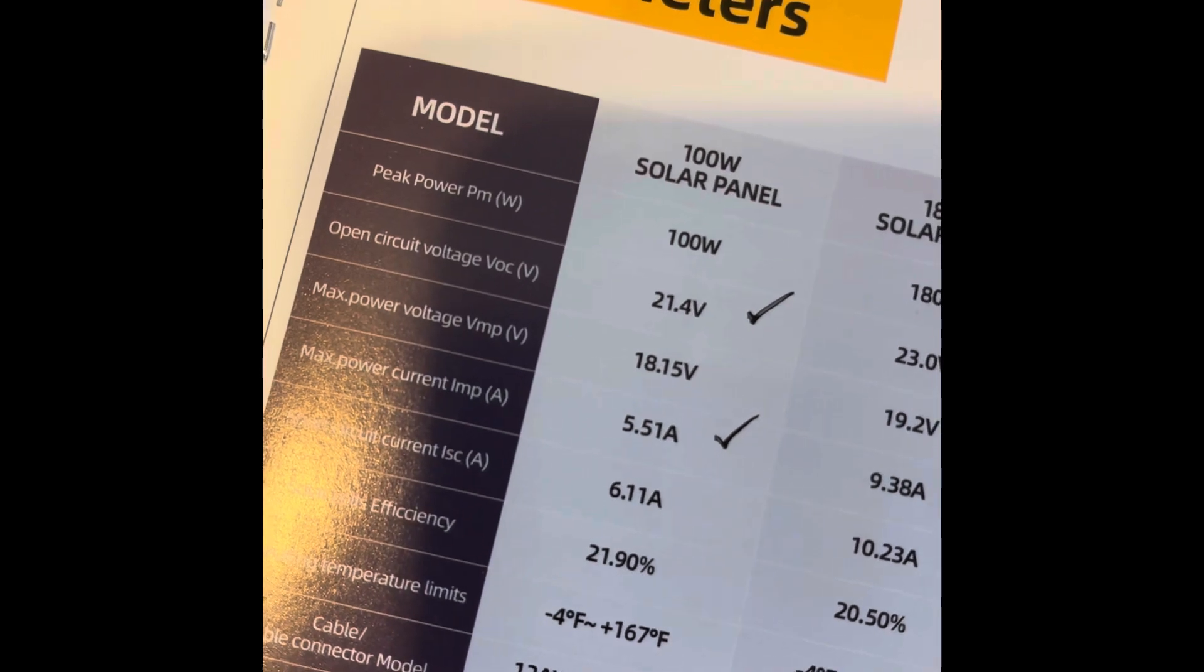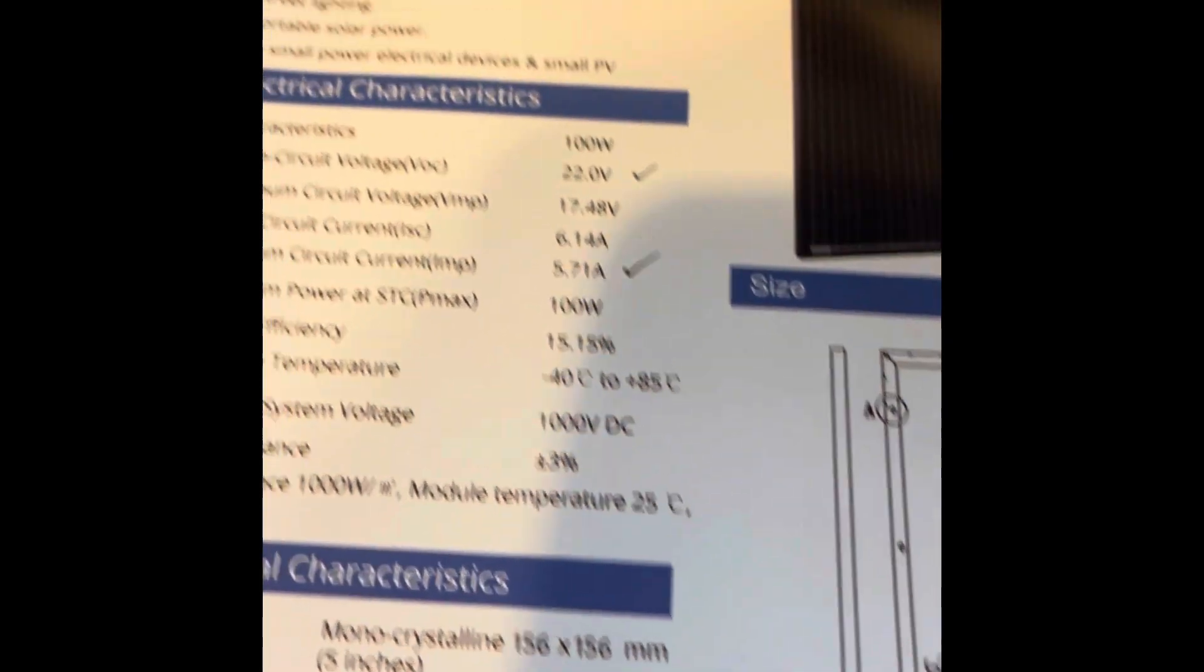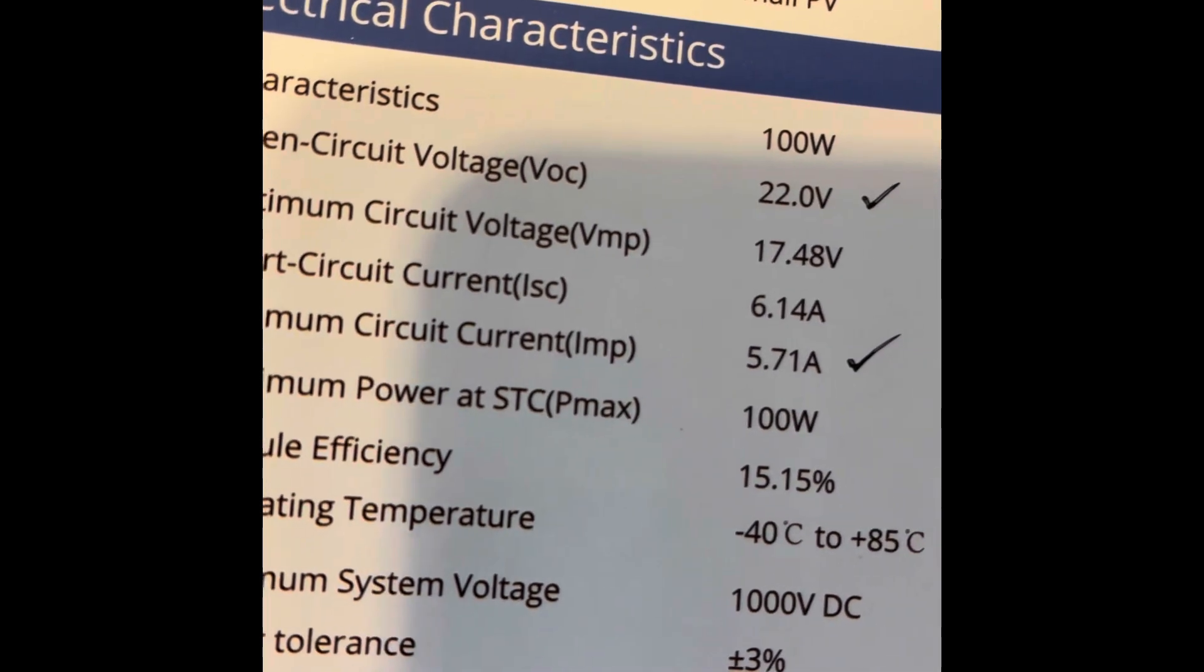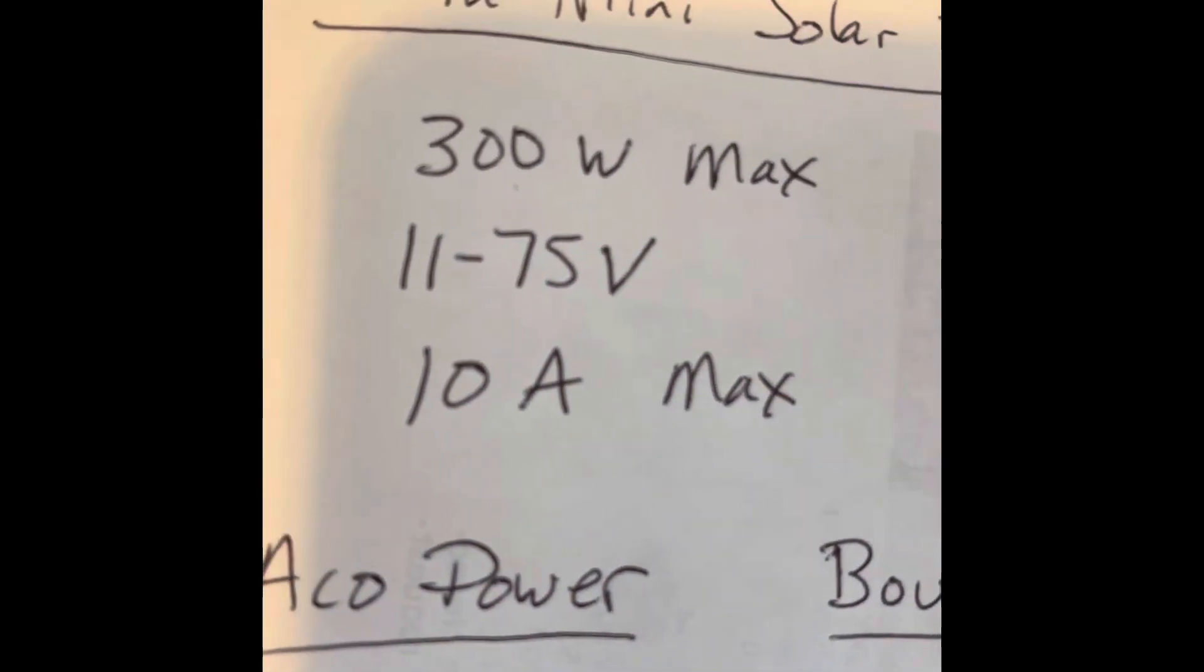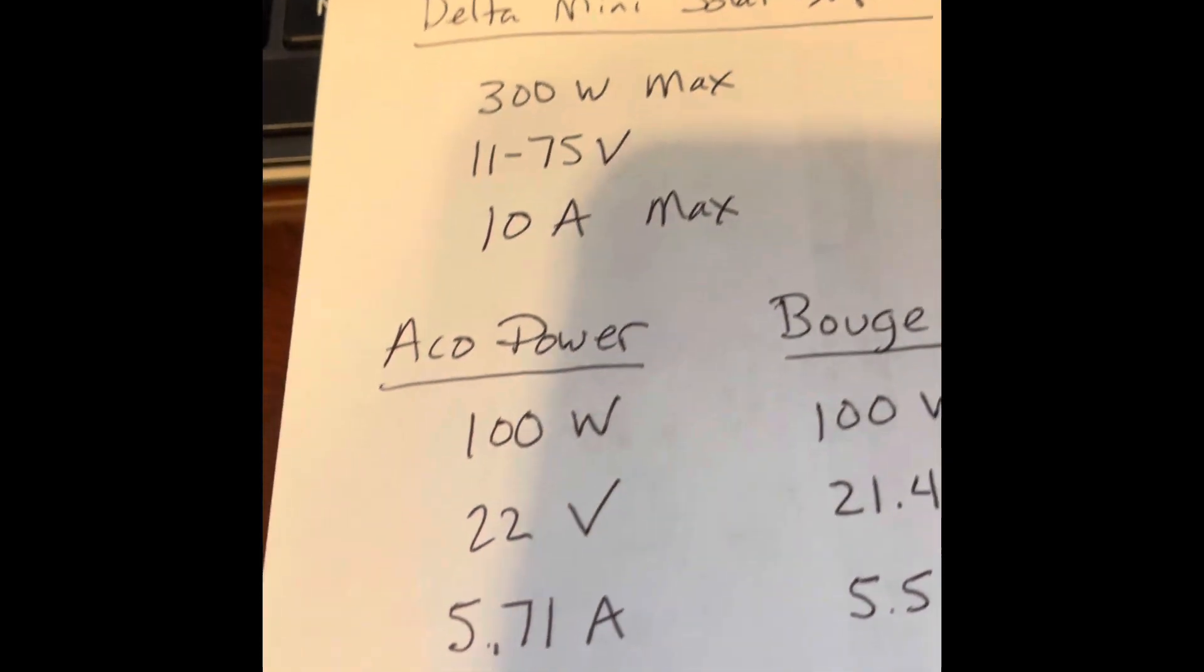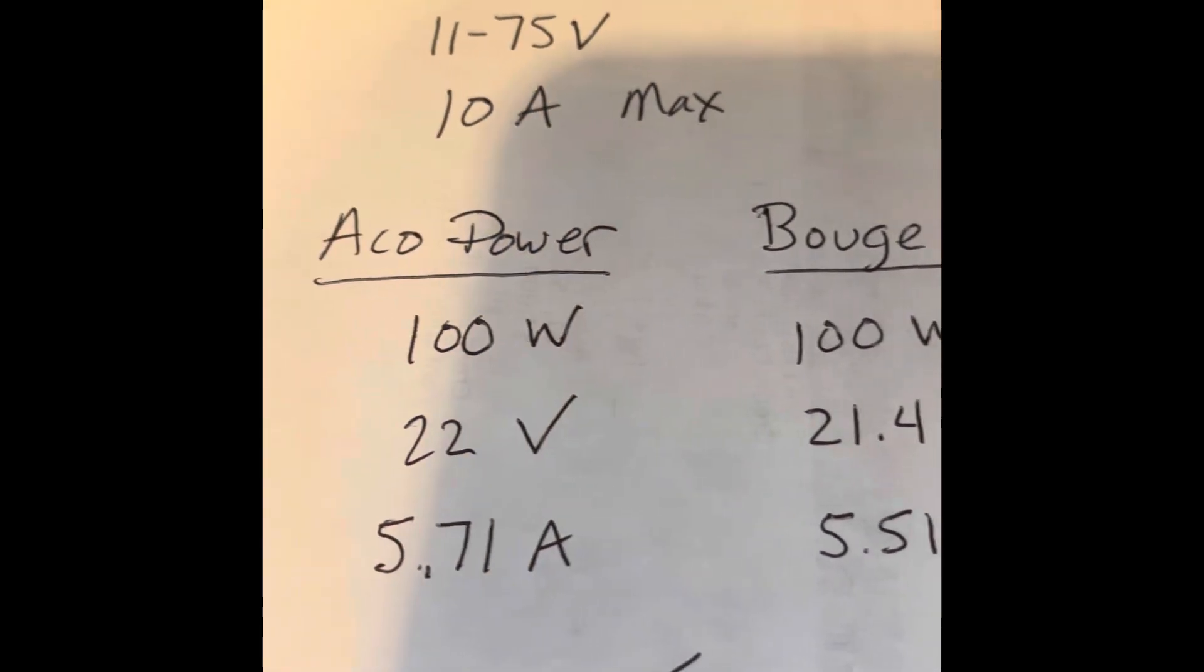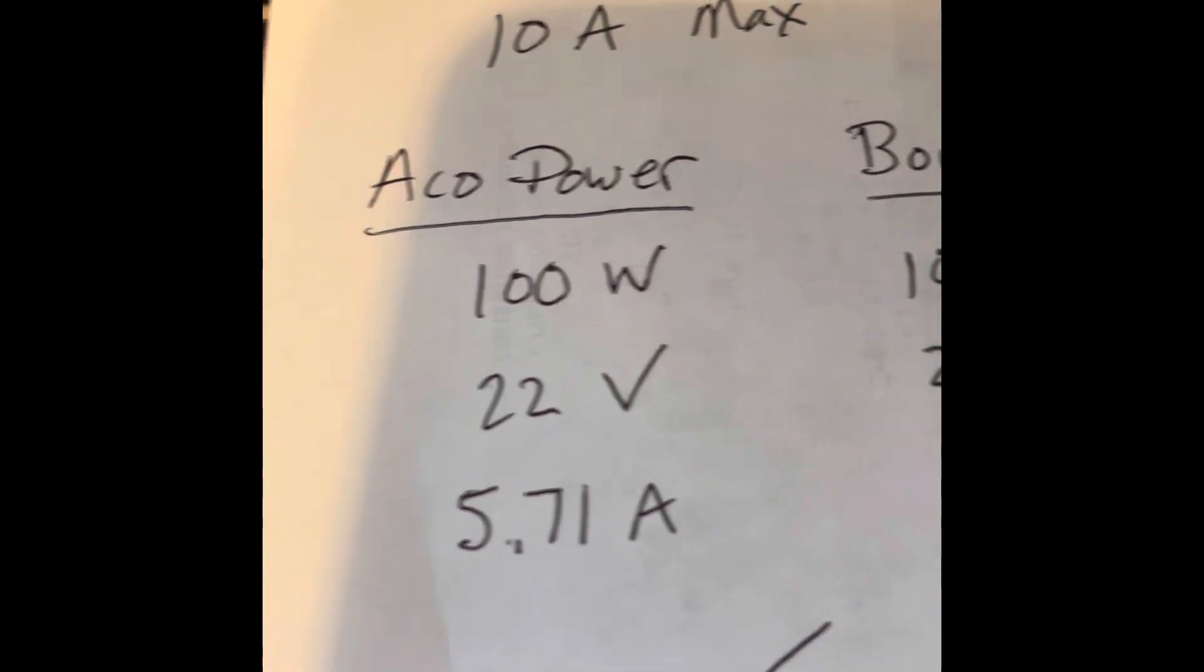Then I took the specs from my ACO Power sheet. The voltage is 22 volts and the amps is 5.71. So I wrote that down. I got my 300 watt max, between 11 and 75 volts, and 10 amp max on the solar input. Then I got the specs that I believe I should be using for the ACO Power and the Bouge RV. They're both 100 watt panels. Their voltage is slightly different. One's 22 volts, the other one's 21.4, and the amps is 5.71 amps from the spec sheet and 5.51.